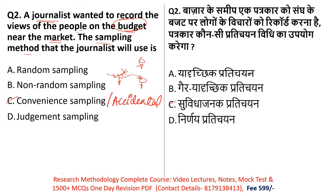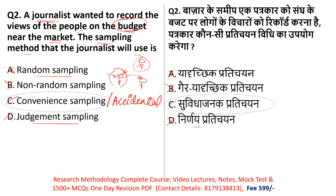Random sampling involves randomly selecting members of the population, but here the journalist is using non-random sampling based on convenience. Judgment sampling is also incorrect here. The correct answer to this question is option C — convenience sampling, which we call Suvidha Janak Pratichayan.